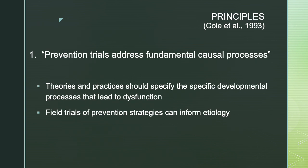Now let's turn to the main principles that Coe and colleagues outlined in the early 90s. The first is that prevention trials should address fundamental causal processes. Research and theory need to work together to move the field forward, and the best way to do this is to have clearly articulated theories about the developmental processes that lead to adverse outcomes. If you have a solid theory about the precursors and their associations with outcome, you can design a developmentally smart prevention strategy whose results could in turn inform what you know about the etiology of a disorder. Prevention trials that are theoretically and developmentally rooted can maintain a good back-and-forth between theory and practice.